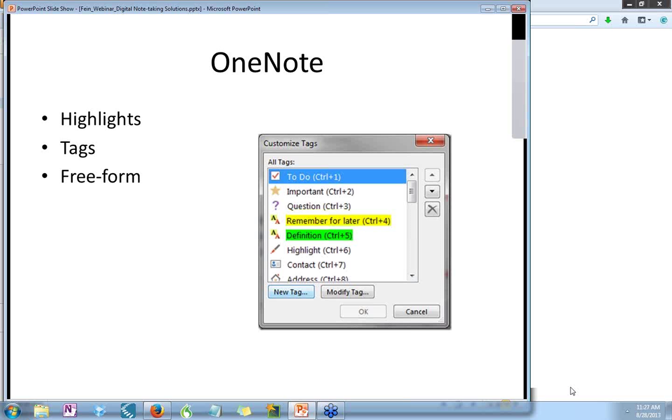In OneNote, you can partner students and have them identify and highlight or tag the key information captured. This will provide them with a framework for revising their notes. As you can see from the sample shown, OneNote provides an extensive array of tagging options. Also available is the ability to create customized tags.